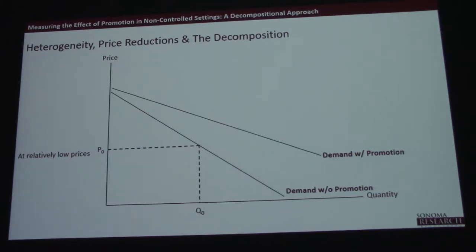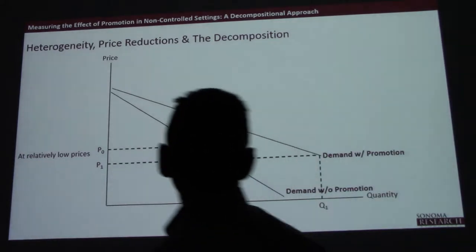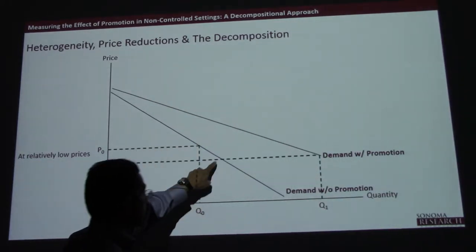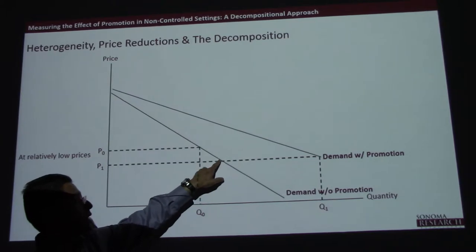These are non-promoted sales, then we have our promoted price and our total sales. We can still do the decomposition. Remember that this is the hypothetical point that we did all that math for, so we need to predict that point.